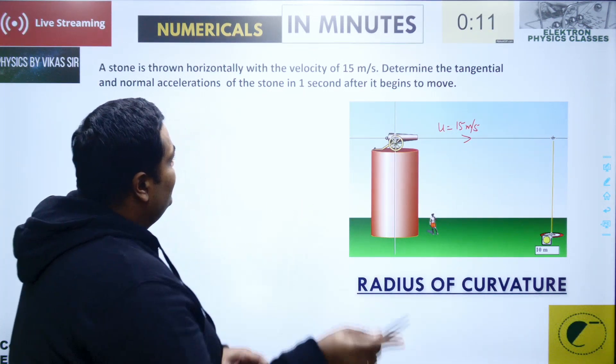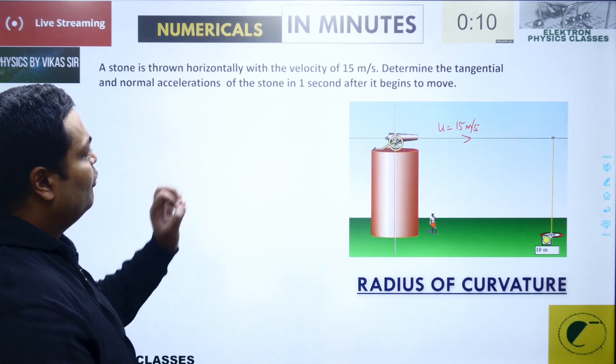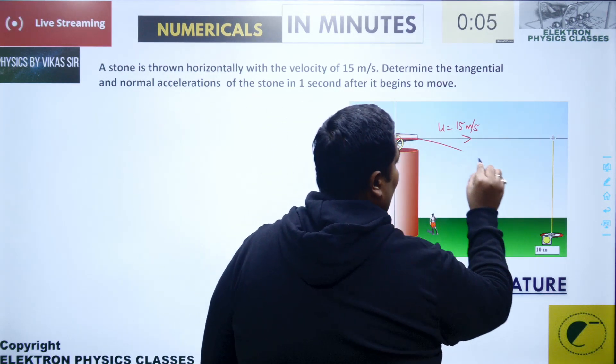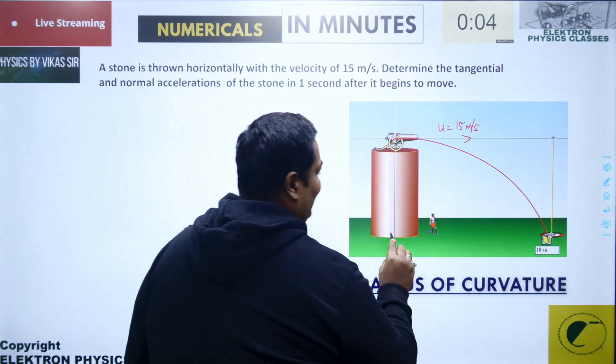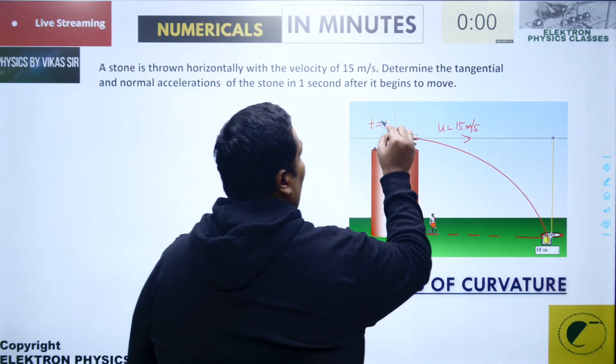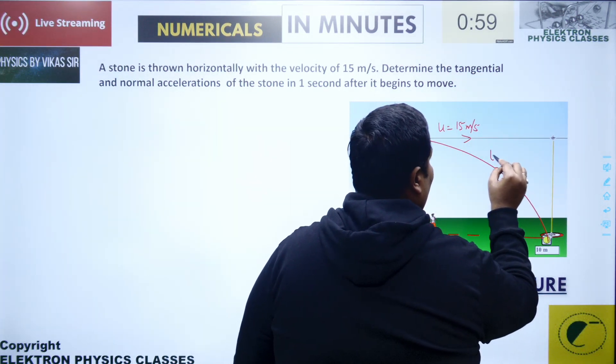The question asks to determine the tangential and normal accelerations of the stone one second after it begins to move. The trajectory of the particle is parabolic and lands over here. At t equals zero the particle is here, at one second it's here at t equals one.